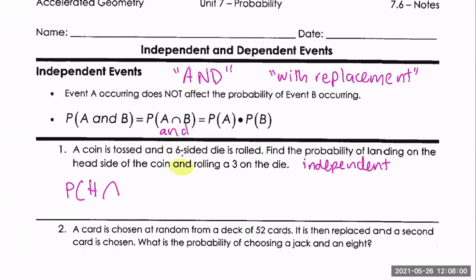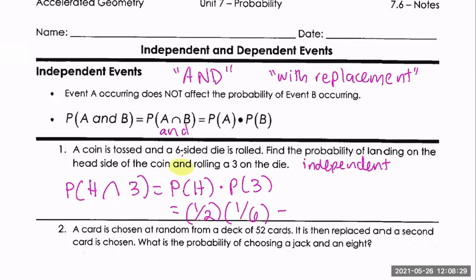A coin is tossed and a six-sided die is rolled. Find the probability of landing on heads and rolling a three. These events are independent. P(heads ∩ three) = P(heads) × P(three) = 1/2 × 1/6 = 1/12.